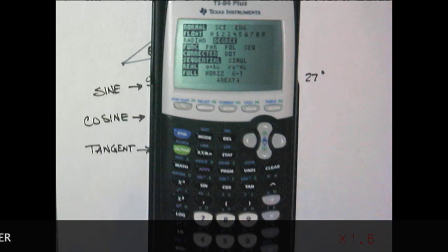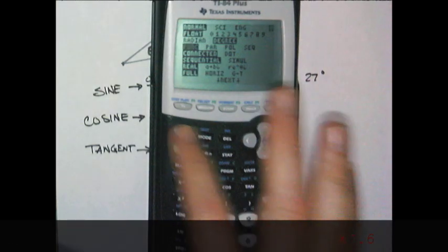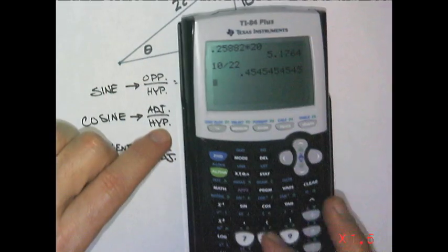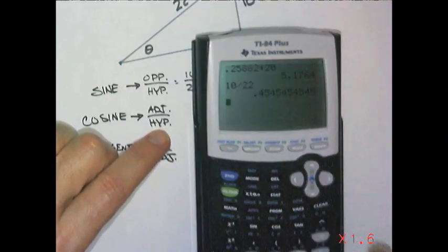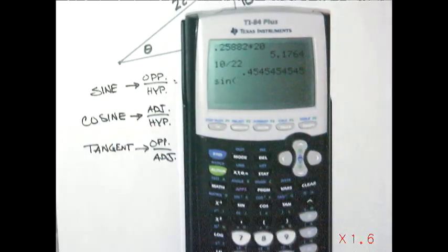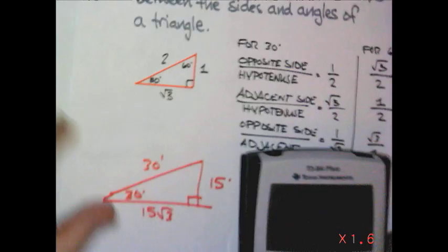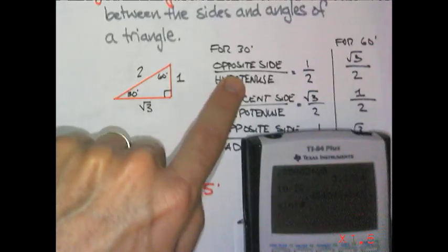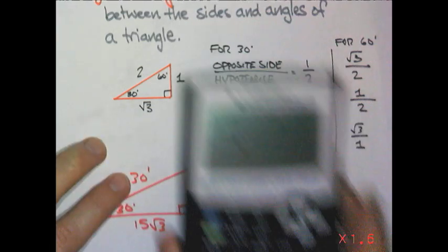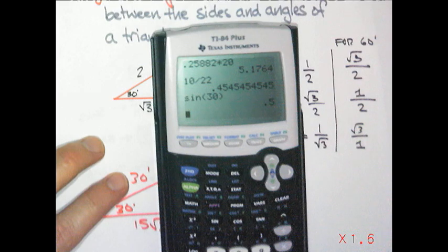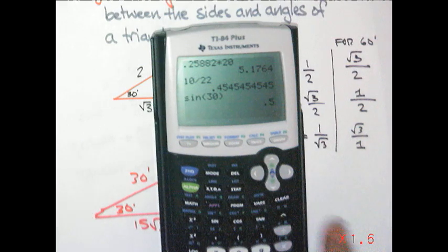So let's just check. If I said, sine, let's do one that we know. One that we know is from the front, right? We know that the sine of 30 degrees would be the opposite compared to the hypotenuse. It should be one half. So if I put sine of 30 degrees, I should get one half, and it gives me 0.5. Alright? That's one half.